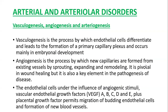Let's start from arterial and arteriolar disorders. Before we discuss those, we will briefly discuss vasculogenesis and angiogenesis. Vasculogenesis is a process by which endothelial cells differentiate and lead to the formation of primary capillary plexus, occurring mainly in the embryonal stage. Most major blood vessels are formed at the embryonal stage, when endothelial cells differentiate and form the vessels.